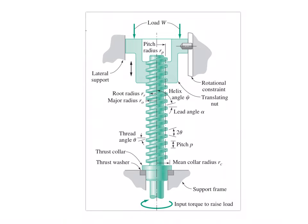The question posed to you is: if I know W, the external load that is to be lifted, and if I know my thread dimensions — by thread dimensions I mean the helix angle, the thread angle, the lead angle, the pitch, the root diameter, the major diameter — all those details are known. What is the torque required to raise the load? I have already posted a video describing all these parameters, so I hope you would have watched those. Now let's straight away attack the question: what is the input torque requirement?